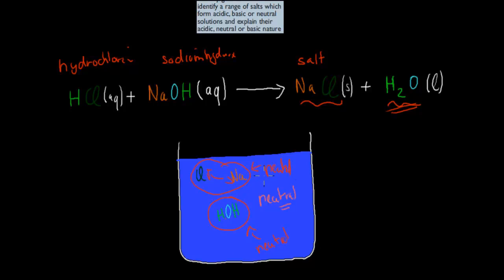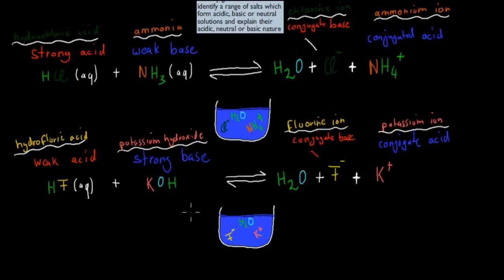We're going to cover something a bit different: identify a range of salts which form acidic, basic, or neutral solutions, and explain their acidic, neutral, or basic nature. The neutral example we just covered is when a strong acid and a strong base come together — they're both equally strong, so they dissociate to the same degree, water is formed, and no excess hydroxide or hydronium ions remain. Therefore it's neutral.